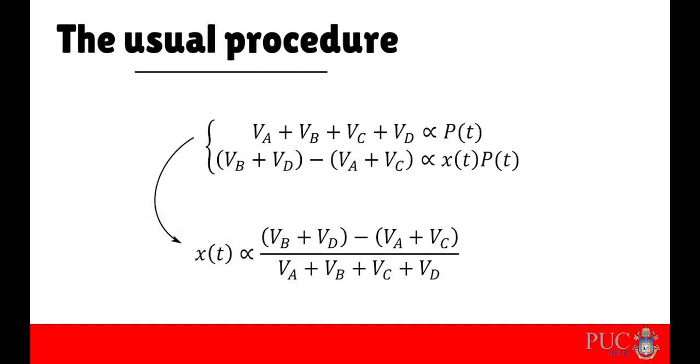Therefore, the sum of the four voltages gives the collected power, while the difference between opposite pairs gives the particle's displacement multiplied by the laser power. Dividing one by the other gives the position of the particle in a given direction.